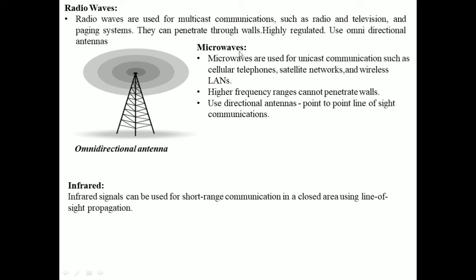Microwaves are used for unicast communications such as cellular telephones, satellite networks, and wireless lines. They have higher frequencies and cannot penetrate walls, so if receivers are inside walls, communication would be a problem.